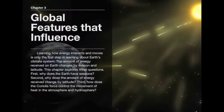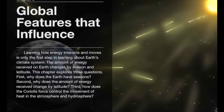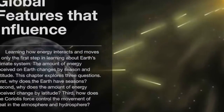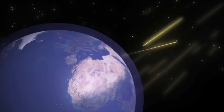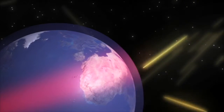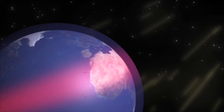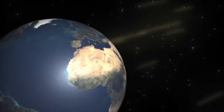Chapter three has seven videos spanning almost 17 minutes worth of content. Chapter three's focus is on the global features that influence climate. This includes Earth's tilted axis, Earth's orbit, and the Coriolis force.